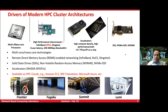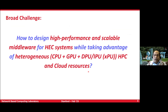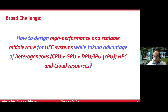When you are trying to design these systems, they are being used for all different kinds of workloads: traditional HPC, AI, machine learning, deep learning, et cetera. So how do we design high-performance and scalable middleware on this heterogeneous environment? We now have CPU, GPU, DPU, IPU, XPU — whatever you can name — and we want to take advantage of all these resources to really deliver the best performance to the application level.